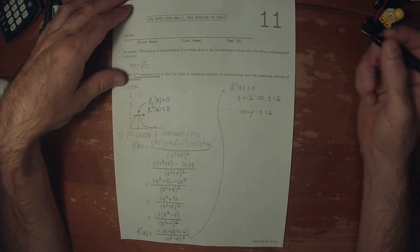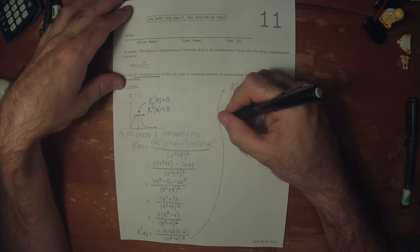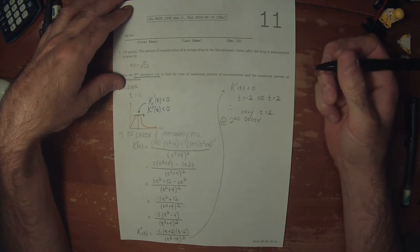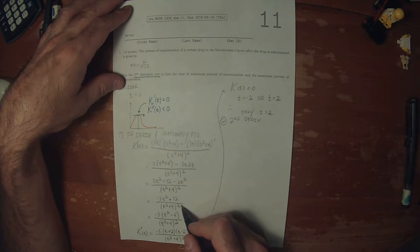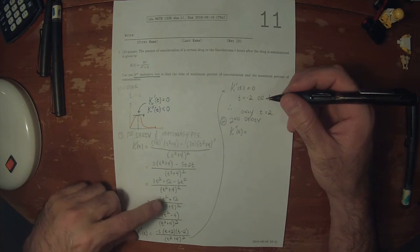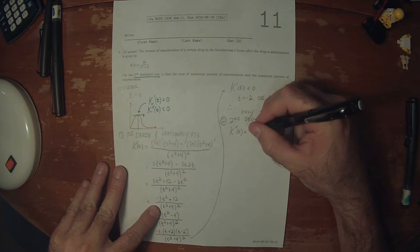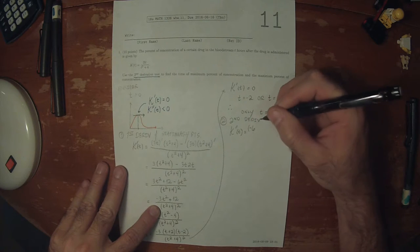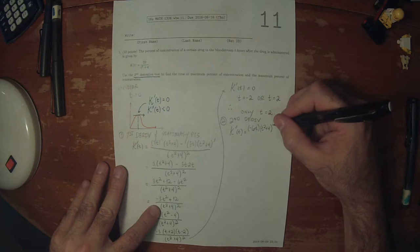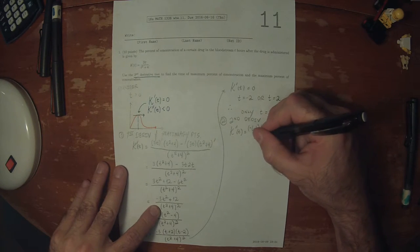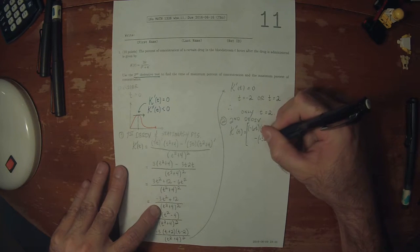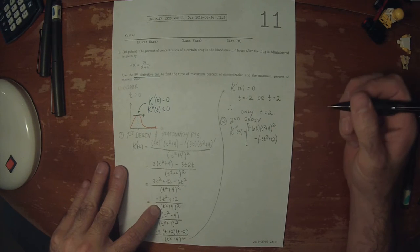So now we want to classify this stationary point with the second derivative test. Let's find the second derivative. Using the quotient rule: the derivative of the numerator, negative 3t squared plus 6t, multiplied by the denominator t squared plus 4 squared, minus the numerator times the derivative of the denominator.